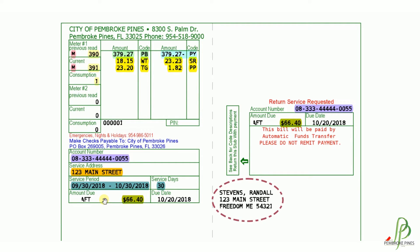The charges, your previous balances, and any payments that you have made will total and show what you owe currently. When you go to make a payment, you're going to want to take note of your utility account number. Your due date is also represented clearly on the bill.